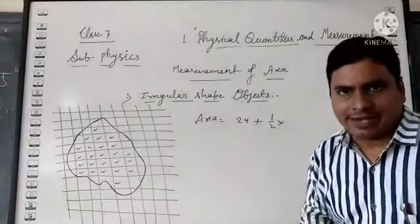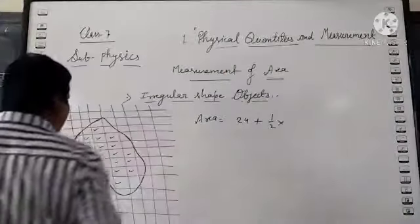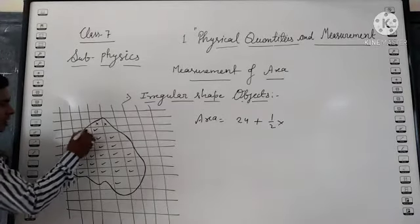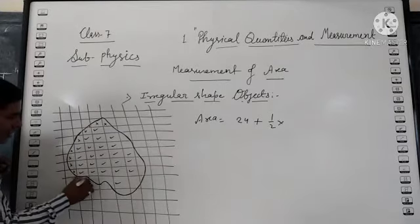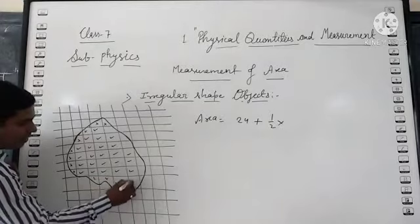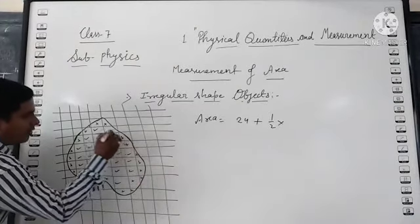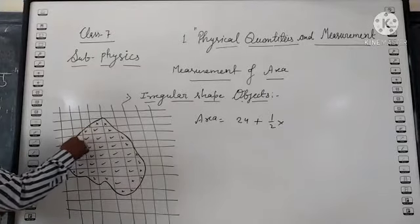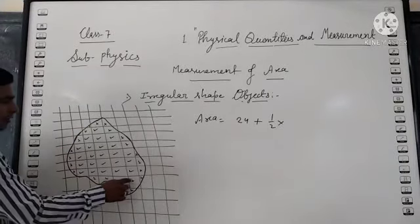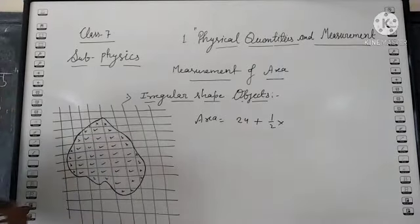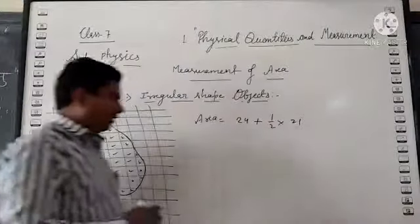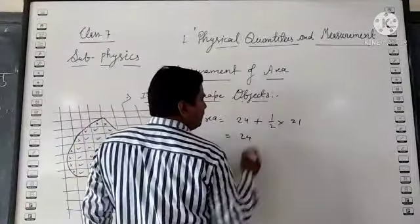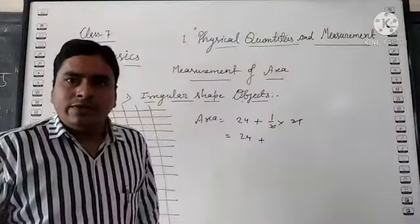How many complete blocks of square are there in this irregular object? Let me count: 1, 2, 3, 4, 5, 6, 7, 8, 9, 10... continuing the count... 19, 20, 21, 22, 23, 24. So there are 24 complete square blocks. Now count the incomplete squares: 1, 2, 3, 4, 5... continuing... 19, 20, 21. So there are 21 incomplete squares.